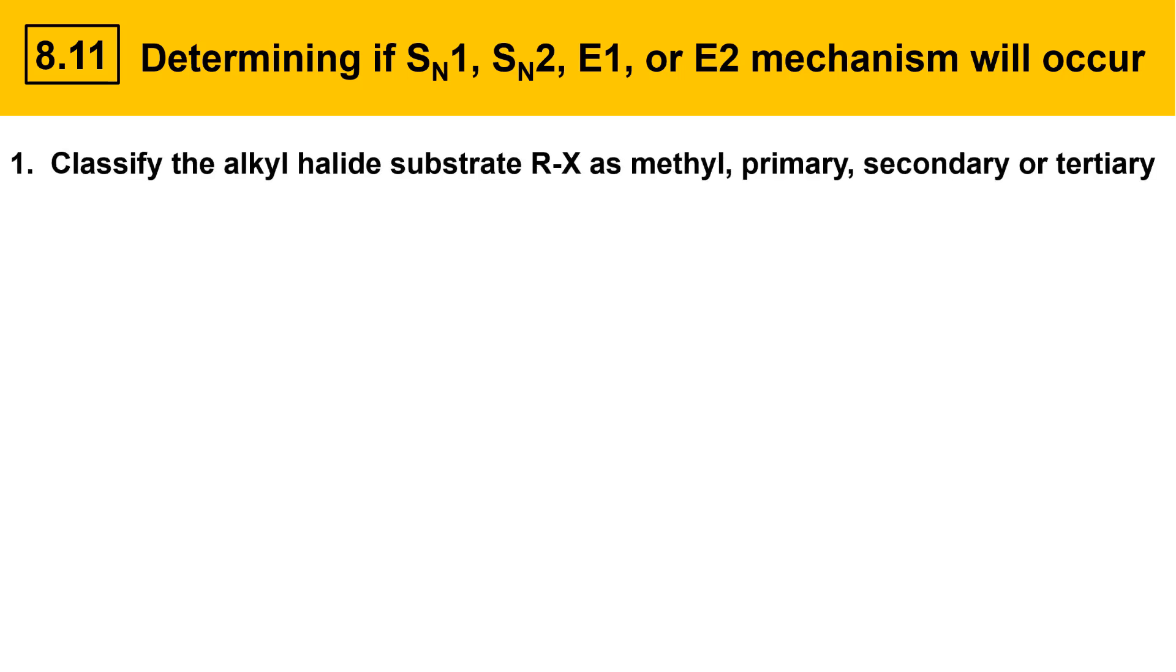The first thing I would suggest is to classify the alkyl halide substrate, the R-X species, as either methyl, primary, secondary, or tertiary. It's an easy thing to do, and it can give you some useful information. It'll point you in the right direction and help you get started. For example, SN2 reactions prefer less highly substituted R-X substrates, like methyl and primary.